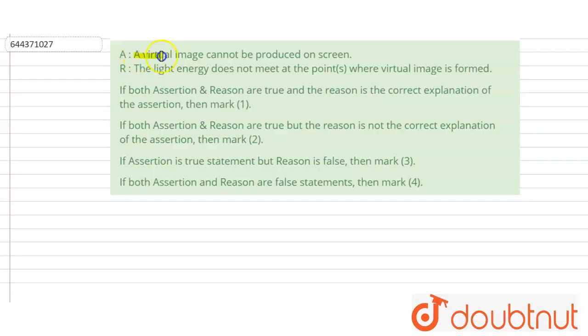The assertion is given: a virtual image cannot be produced on a screen. The reason is given: the light energy does not meet at the points where a virtual image is formed. So first of all, what is a virtual image?